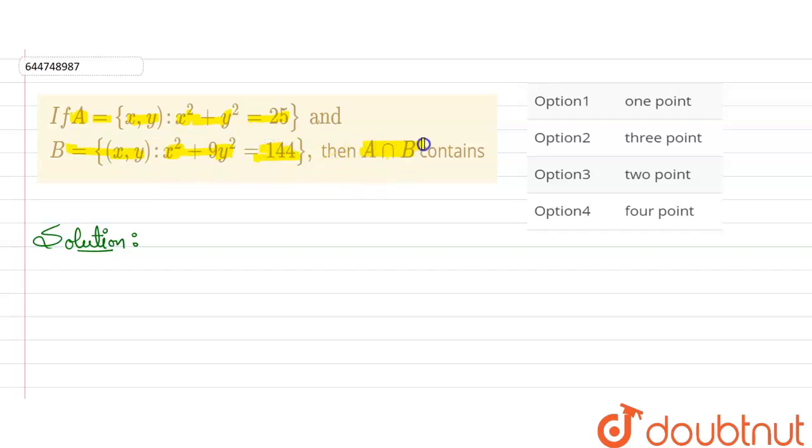Then A intersection B contains how many points? One, two, three, four - the options are here: one point, three points, two points, and four points. So look here, let me write the equation for set A.